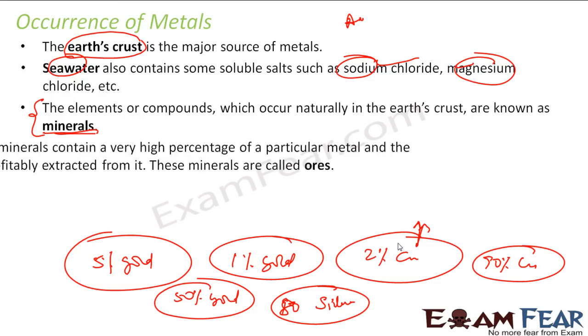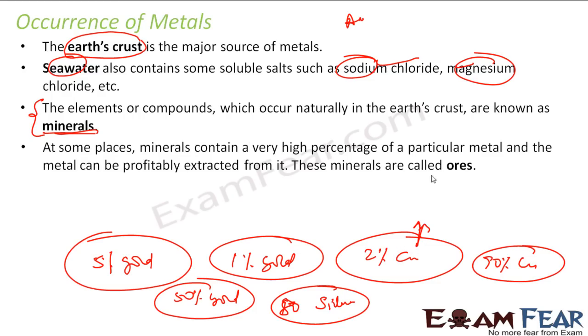So we have a new term called ores. Ores are those minerals which have a high percentage of a particular metal and from which it is profitable to extract that metal.